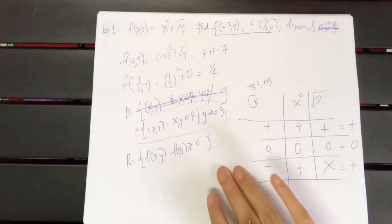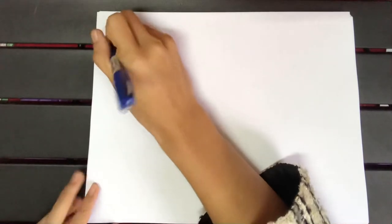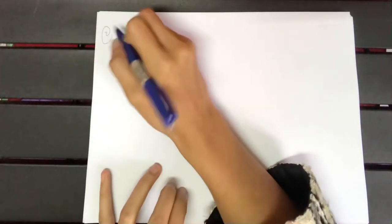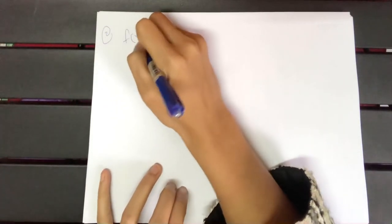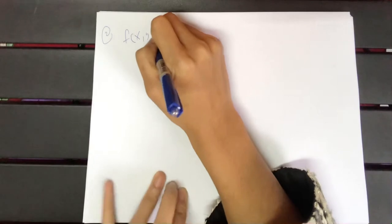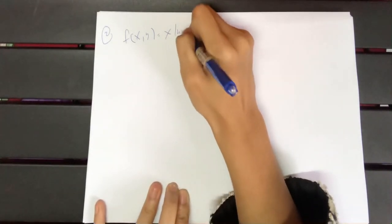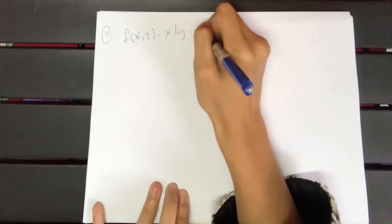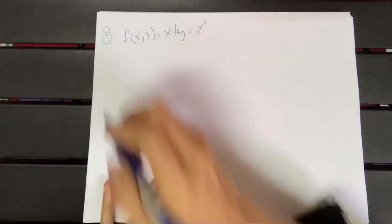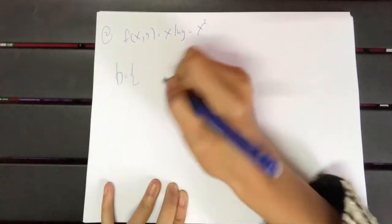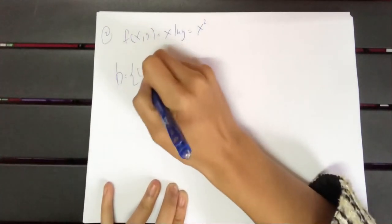Let's try one more example so you can see it more clearly. I'll just go to the domain and range since that's the highlight of this topic. Domain here means the set of (x, y) such that the function exists when you substitute values.